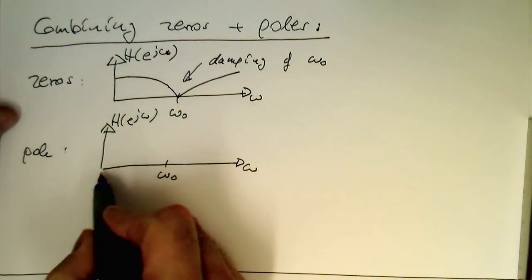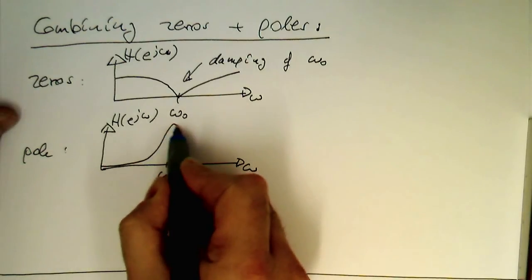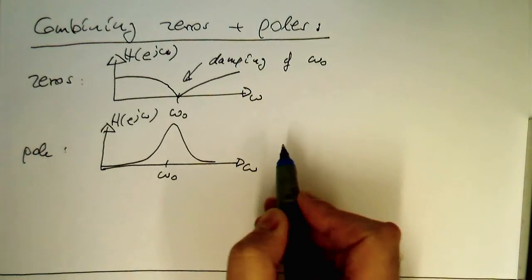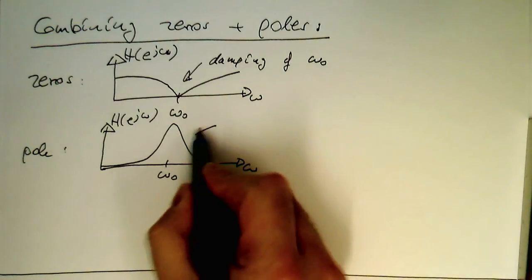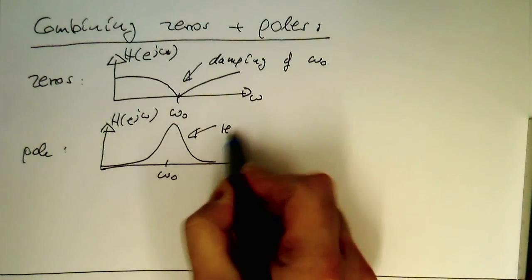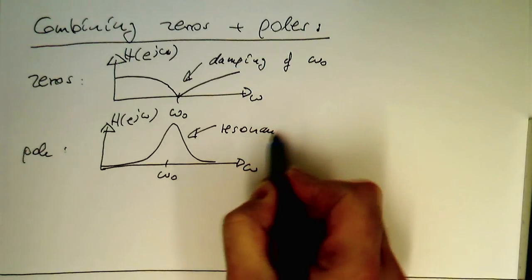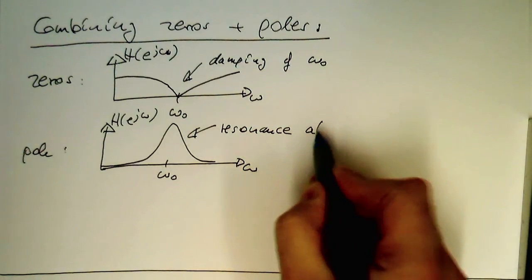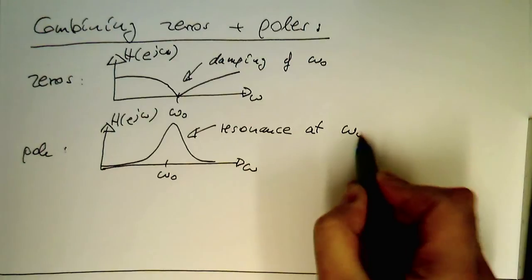So then the pole does, interestingly, just the opposite. So the pole creates a resonance here at this point and at omega zero.